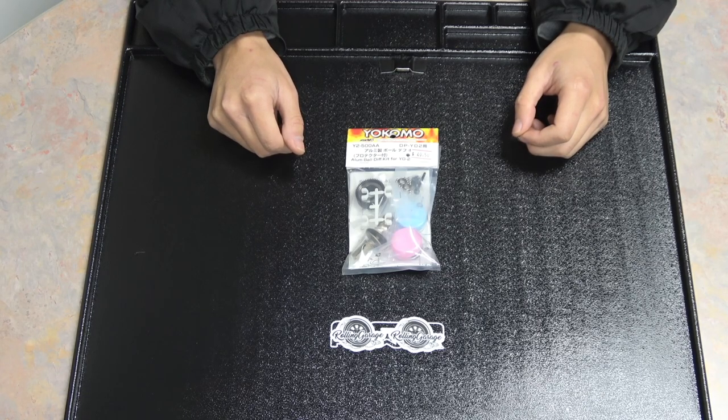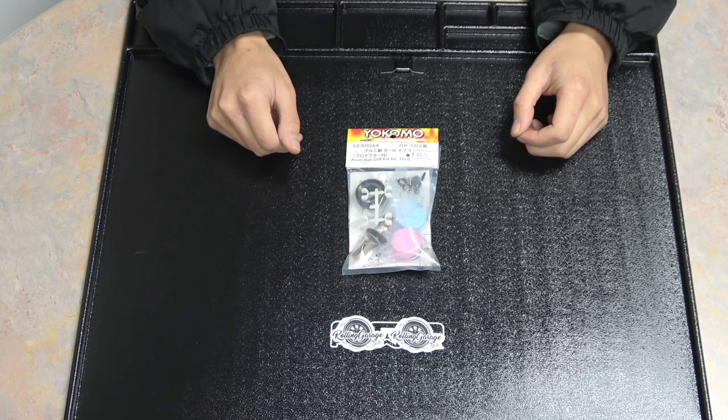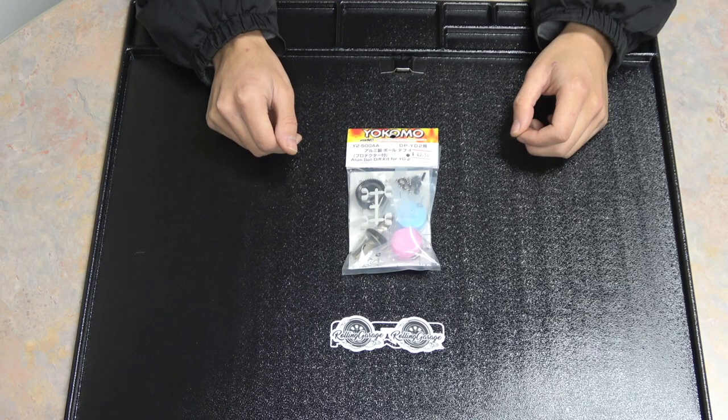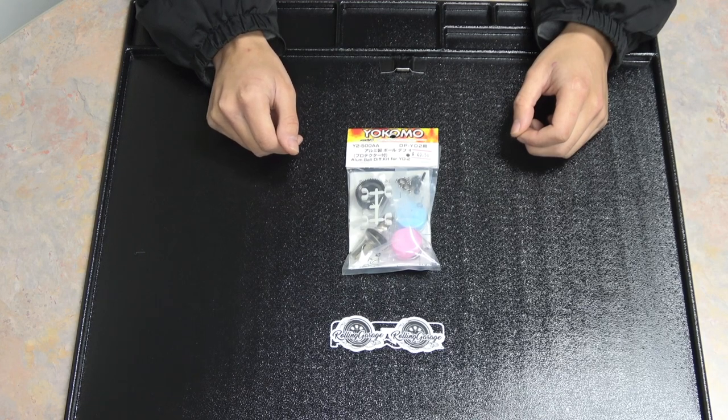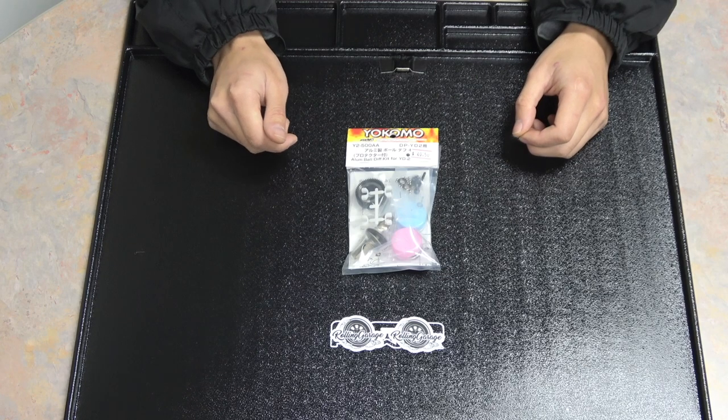If you run a ball diff too loose on a high grip surface like asphalt or carpet, it'll actually unload all the power through the diff and it'll act like a slipping clutch and your car won't move. I'll show you guys examples of that near the end of this video, but with all that said, let's jump into this build.